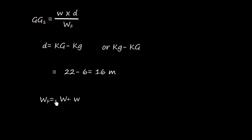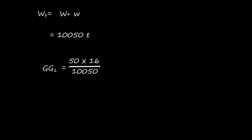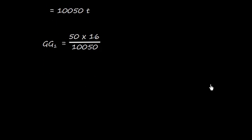Now the final weight, which is W plus w, where W is the initial weight and small w is the weight loaded, then it is going to be 10,050 tons. So we can easily calculate the value of GG1, which is 0.07960199, and we can round off to 0.080.